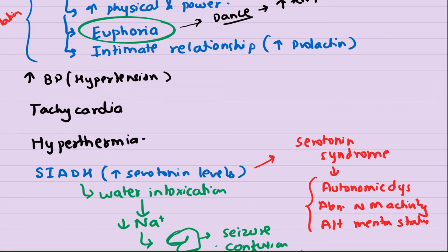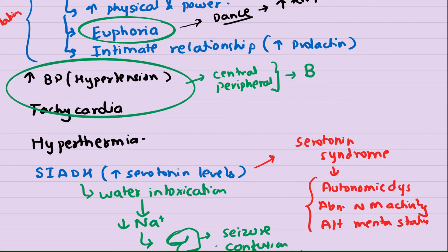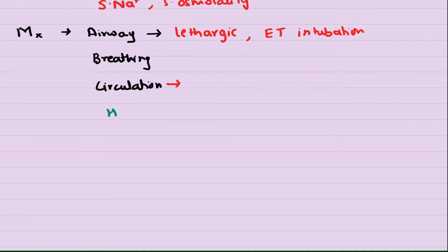With circulation, one of the clinical features of MDMA is hypertension. Hypertension will occur because of increased catecholamine levels - noradrenaline and dopamine. Now what to do for hypertension? Basically, this hypertension can occur because of central stimulation as well as peripheral stimulation. To calm down the central system, we initially use benzodiazepines.